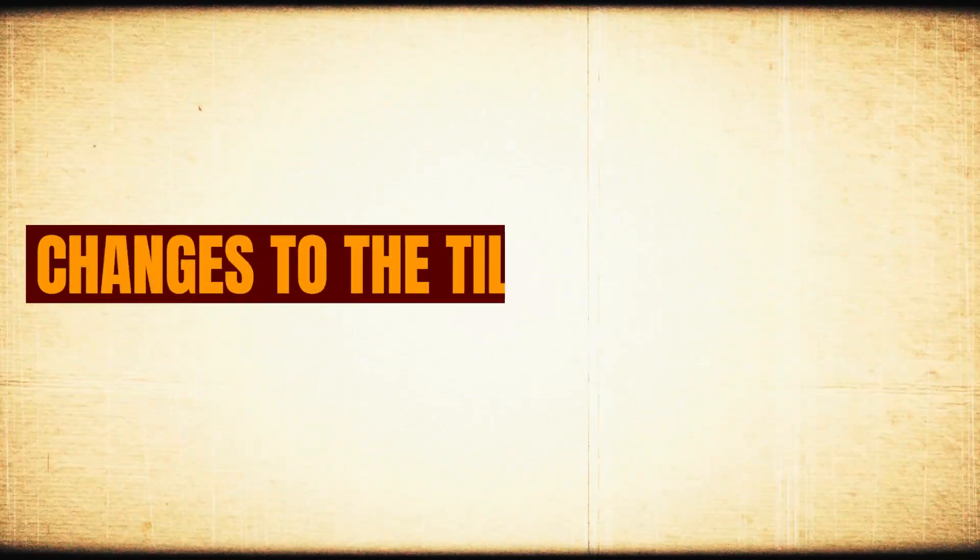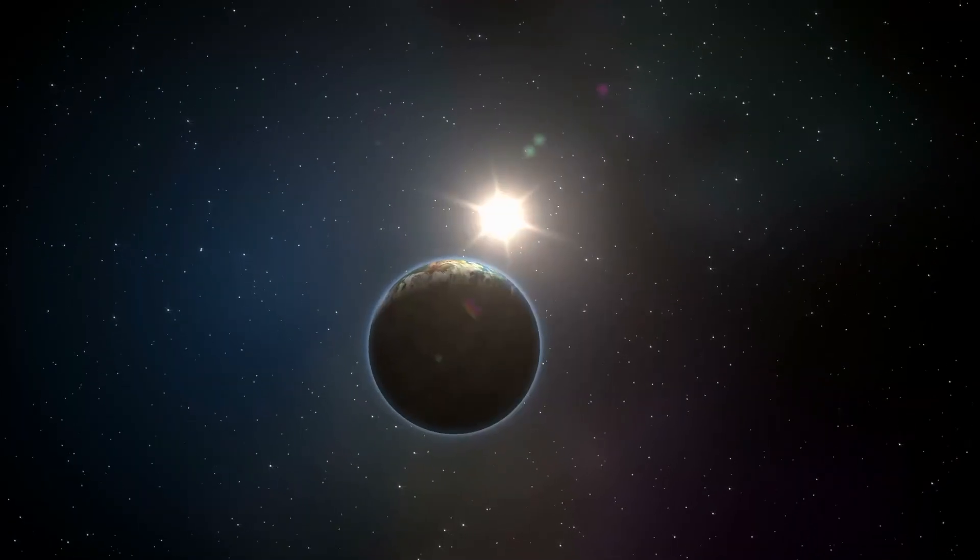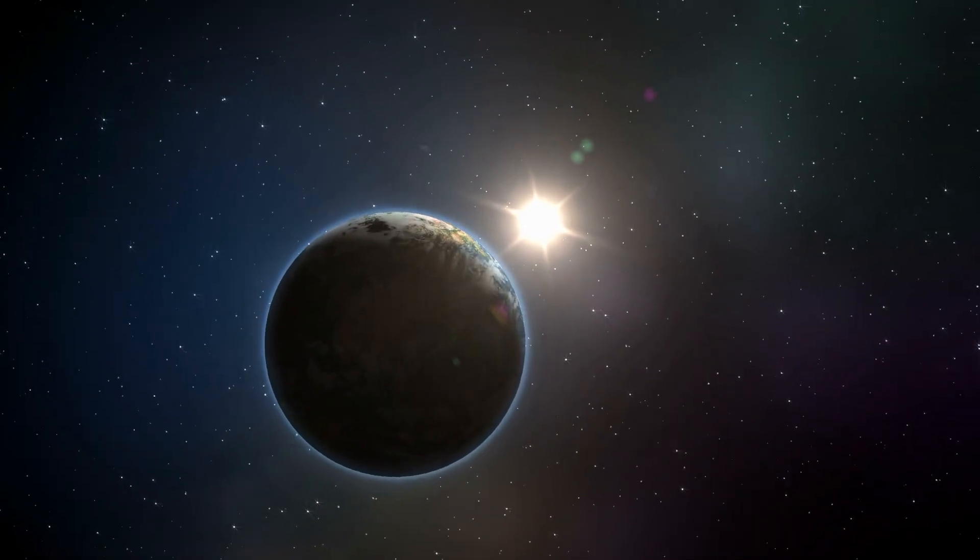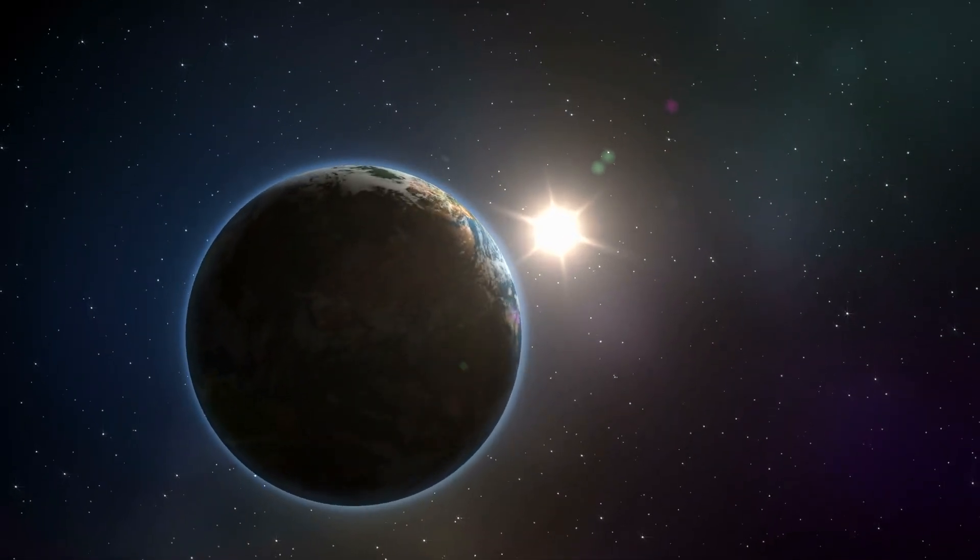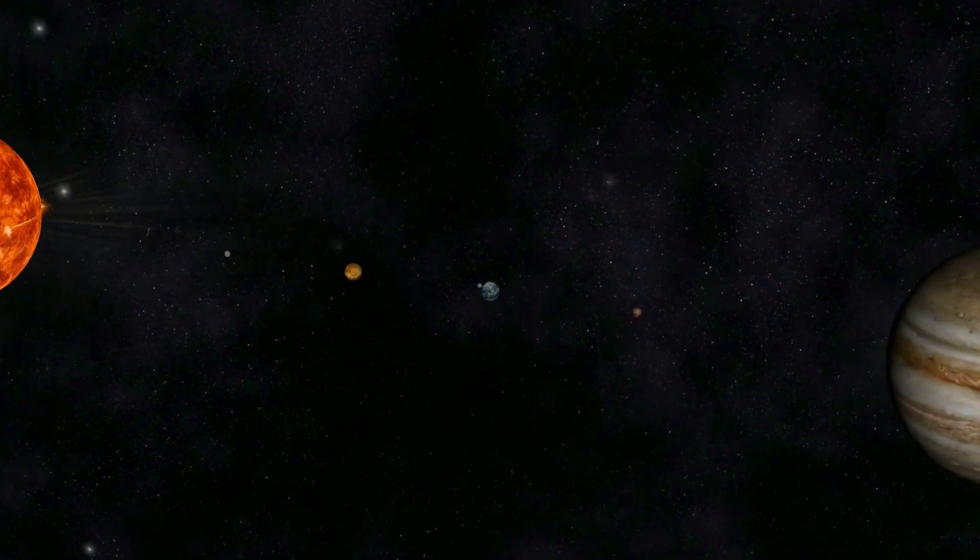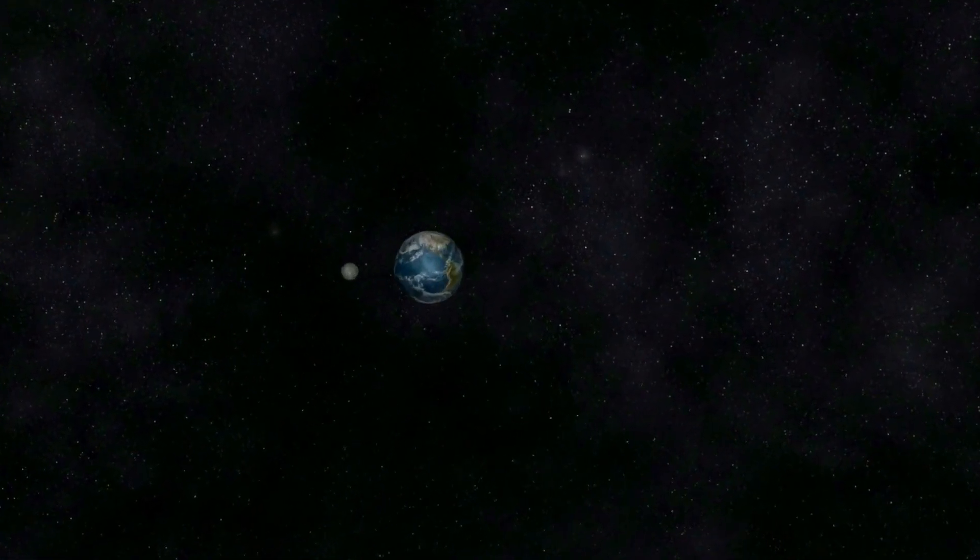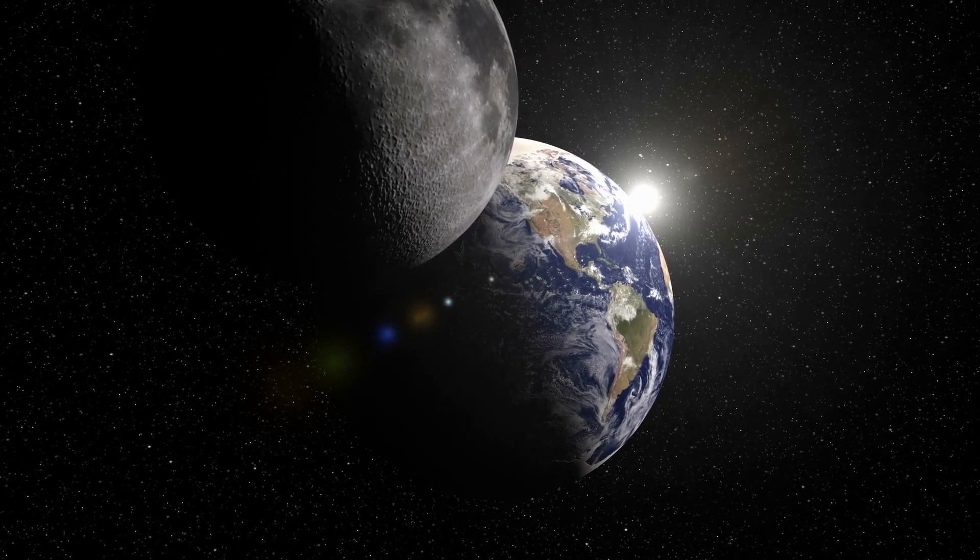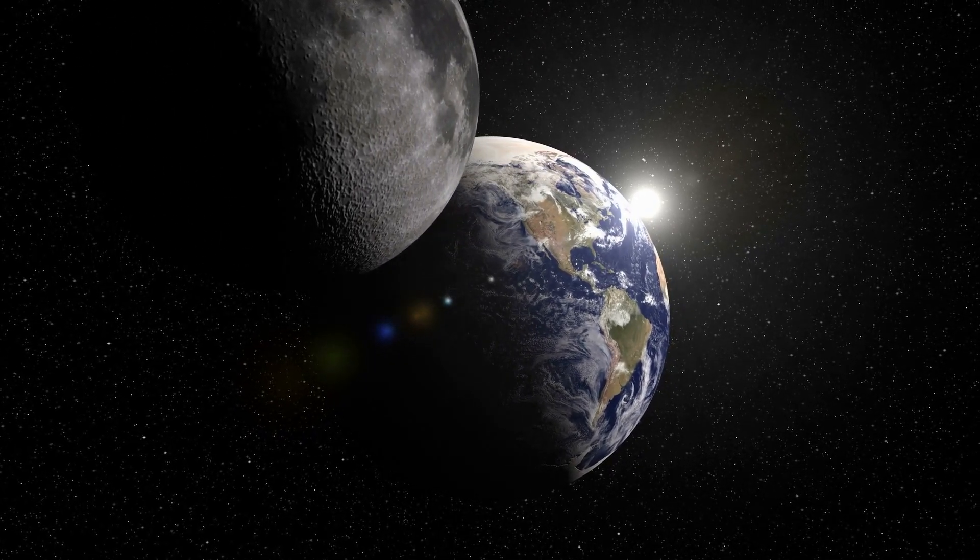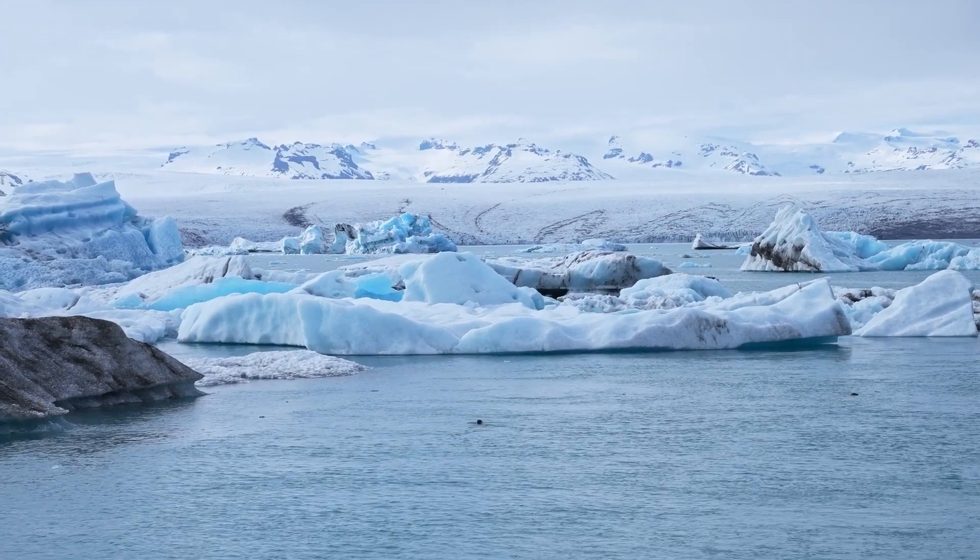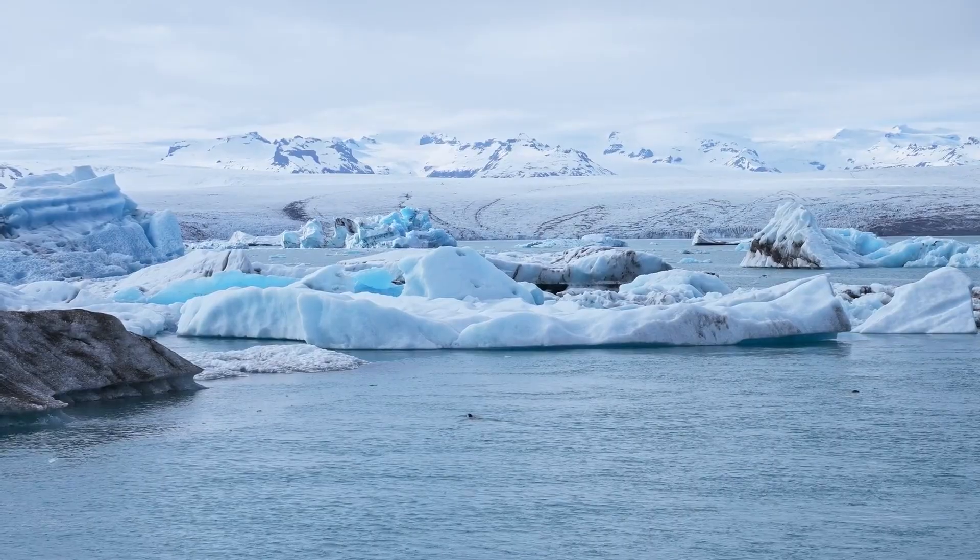Our planet spins on an axis that is tilted toward the orbital plane. Currently, this tilt (also called obliquity) deviates by 23.4 degrees from what would be a 90-degree angle toward the orbital plane. But this obliquity oscillates over time. Over the last million years, it has been swinging from 22.1 degrees to 24.5 degrees.